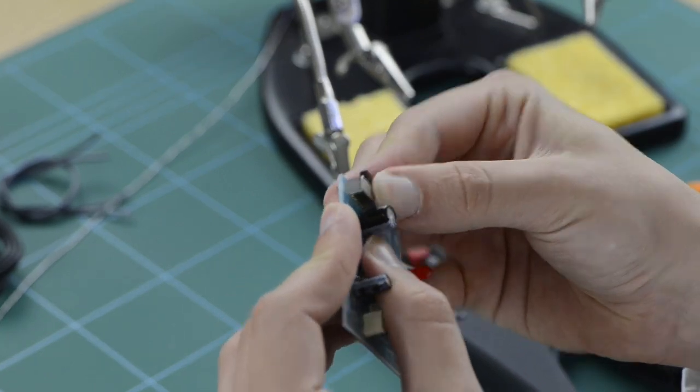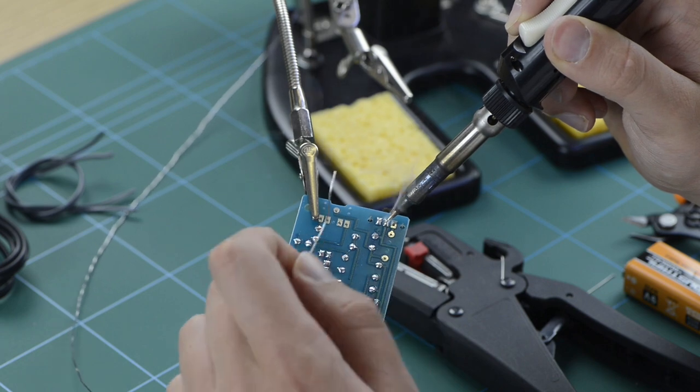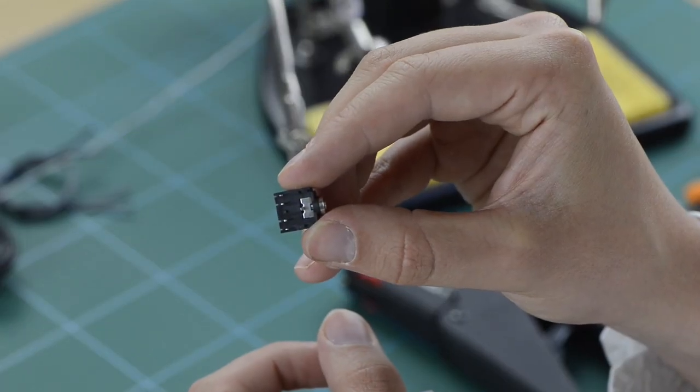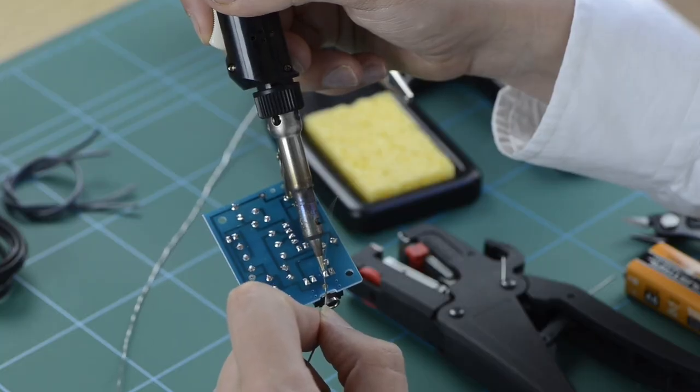Take your slide switch and place into the designated hole on the PCB board, ensuring the switch faces outwards and solder into place. Next, take your stereo PCB jack socket and apply it to the designated space on your board and solder into place.